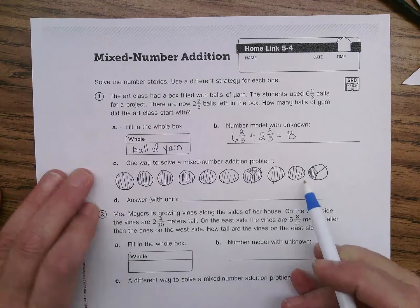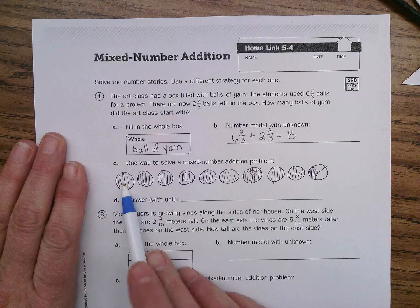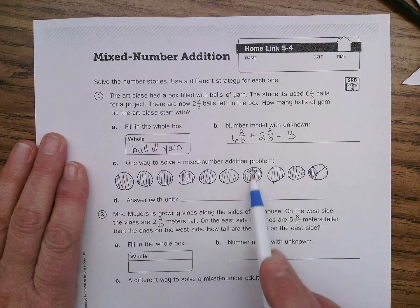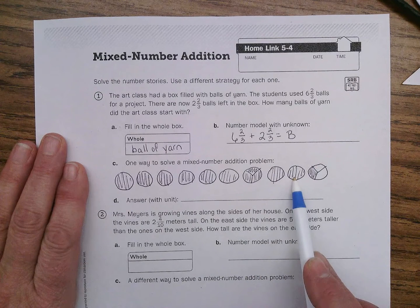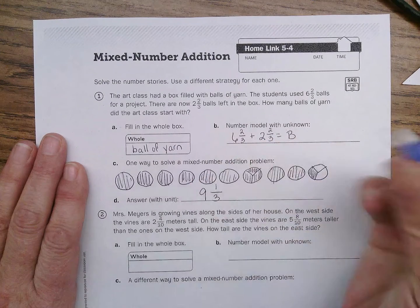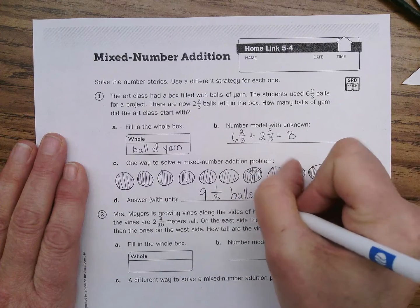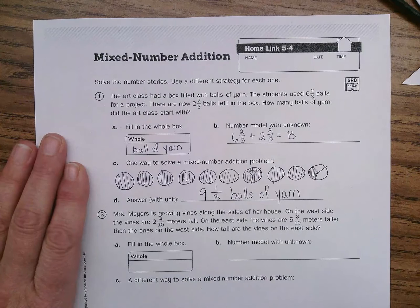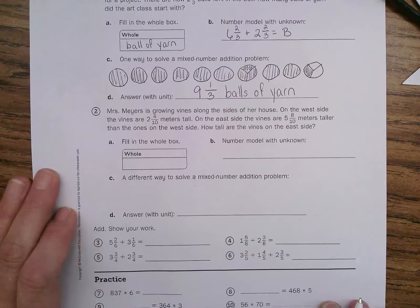So that looks about right. So, let's see how many balls of yarn we had to start with. One, two, three, four, five, six, seven. Seven, because that's a whole now. Eight, nine. Nine wholes and one-third. Nine and one-third balls of yarn. There. Okay, that wasn't too bad. Let's go to the next one.